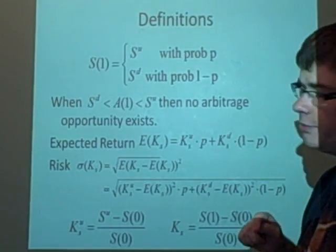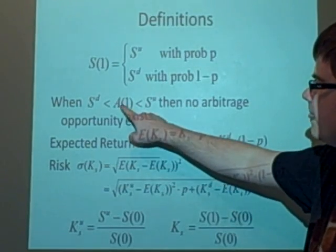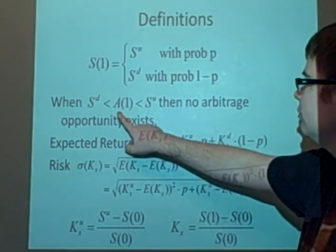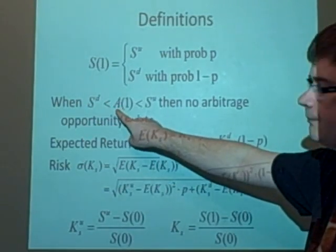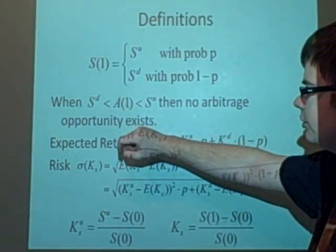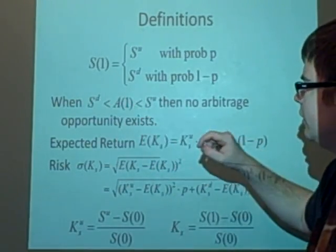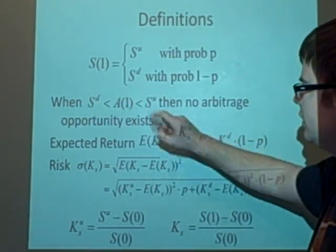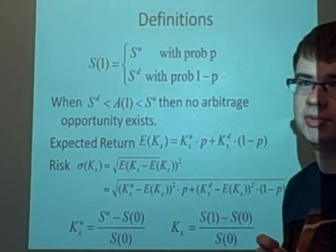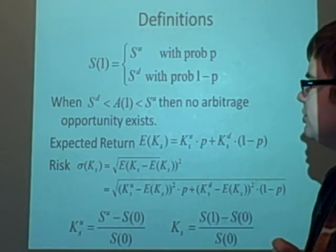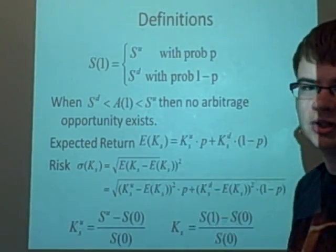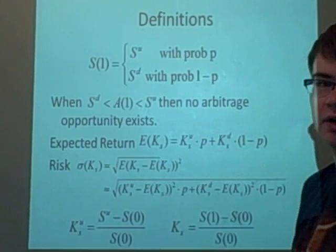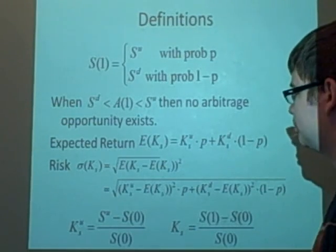I probably should have put this in the last video, but if the bond price that you have, so you have stocks as S and bonds as A at time 1, if that was between SD and SU, then there is no arbitrage opportunity. If it is not, so SD could be bigger than it or SU could be less than it, then there might be an arbitrage opportunity.